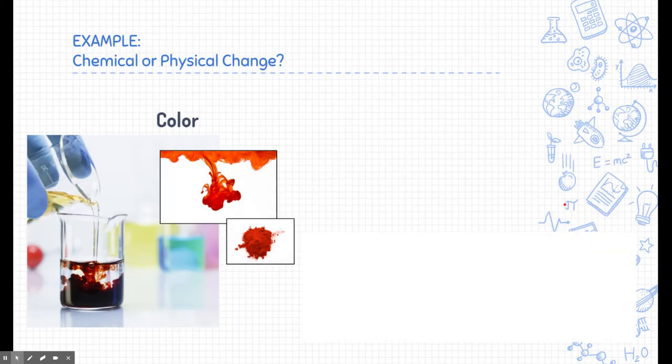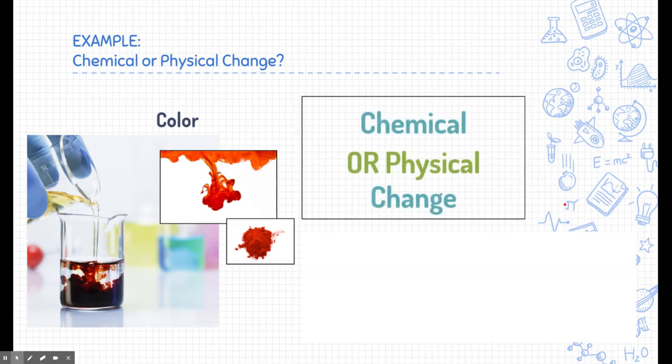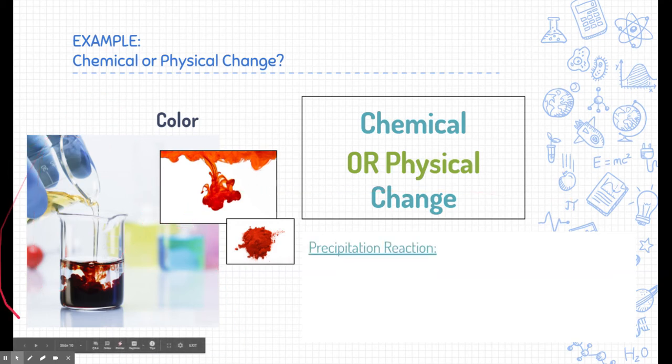What about a color change? This one's a little bit more challenging and it kind of is situational depending on what you're looking at. So color change can be either chemical or a physical change depending on what we see. Let's take a look at our two examples here.